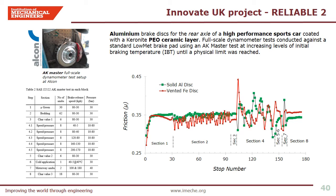Brake dynamometer tests at the University showed no damage and wear to the PEO coated rotor up to 500 degrees Celsius. This Innovate UK funded two-year project is conducting tests on aluminum alloy brake discs for the rear axle of a high-performance sports car. The aluminium disc coated with a Caronite PEO ceramic layer was subjected to full-scale AK Master dynamometer tests at Alcon's facility at increasing levels of initial braking temperature. A standard low-metallic brake pad was used. Details of the AK Master tests comprise various test sections including mu-green, bedding, speed-pressure variations, characteristic values and motorway snubs. Friction values are rather similar for both iron disc and the PEO coated aluminum disc, typically 0.3 to 0.35, similar to values recorded at the University bench dynamometer tests. Notably, COF values are more stable with less scatter for the PEO coated aluminum disc, especially during the bedding cycle.